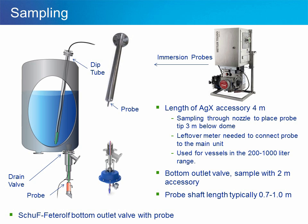The overall length of the silver halide accessory is limited to about 4 meters. Therefore, sampling through a nozzle at the top of the vessel will allow the probe tip to be placed about 3 meters below the dome, with a leftover meter needed to connect the probe to the main unit. This approach is often used for vessels in the 200 to 1,000 liter range. By going through a bottom outlet valve, a vessel this size can be sampled with a 2 meter accessory. The probe shaft is designed to match the valve, and the length of the shaft is typically 0.7 to 1 meter.